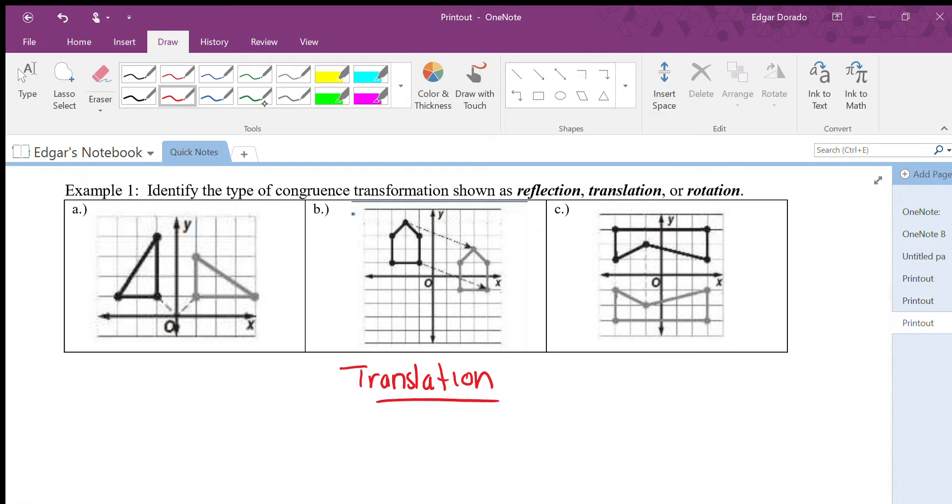I think that one was the easiest out of all of them. All right, the next easiest I think would be actually C. That one is actually going to be a reflection.